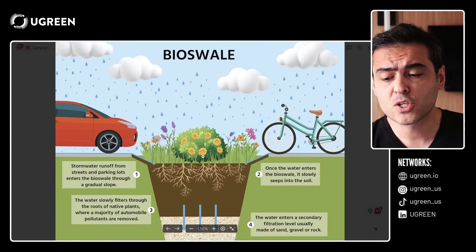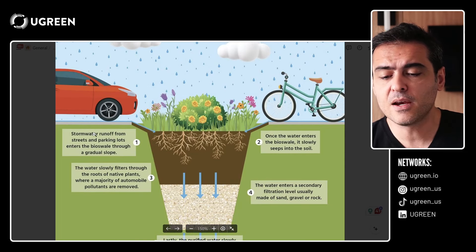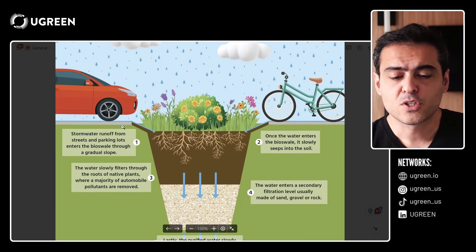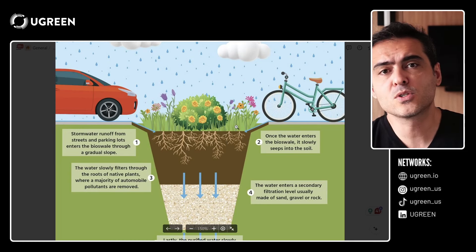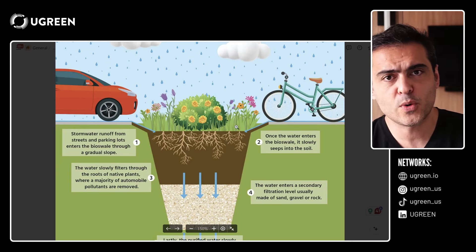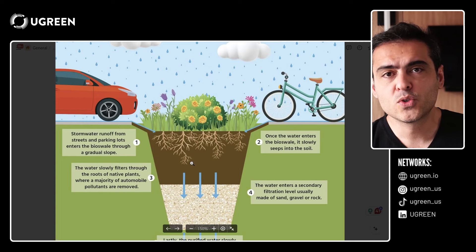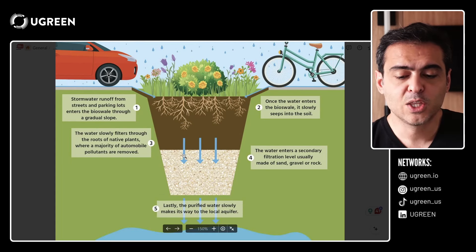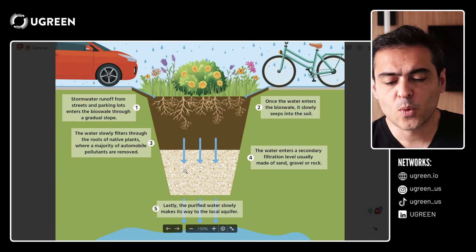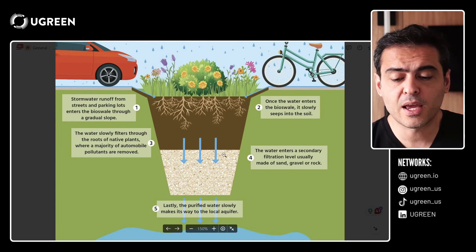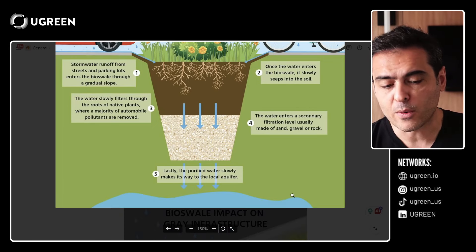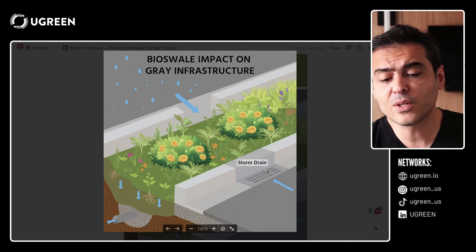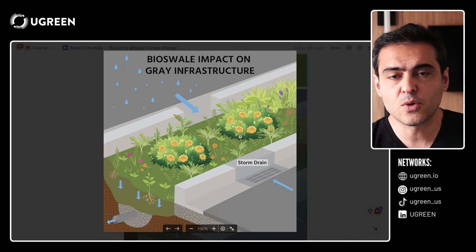Here's how a bioswale works. We can see the stormwater runoff coming from the streets. The water enters the bioswale, then is slowly drained through the soil. The roots filter the water, which enters the sand or rocky layer, and the water is purified and makes its way to the local aquifer. Here's another picture showing how it drains — via storm drain or from the street.